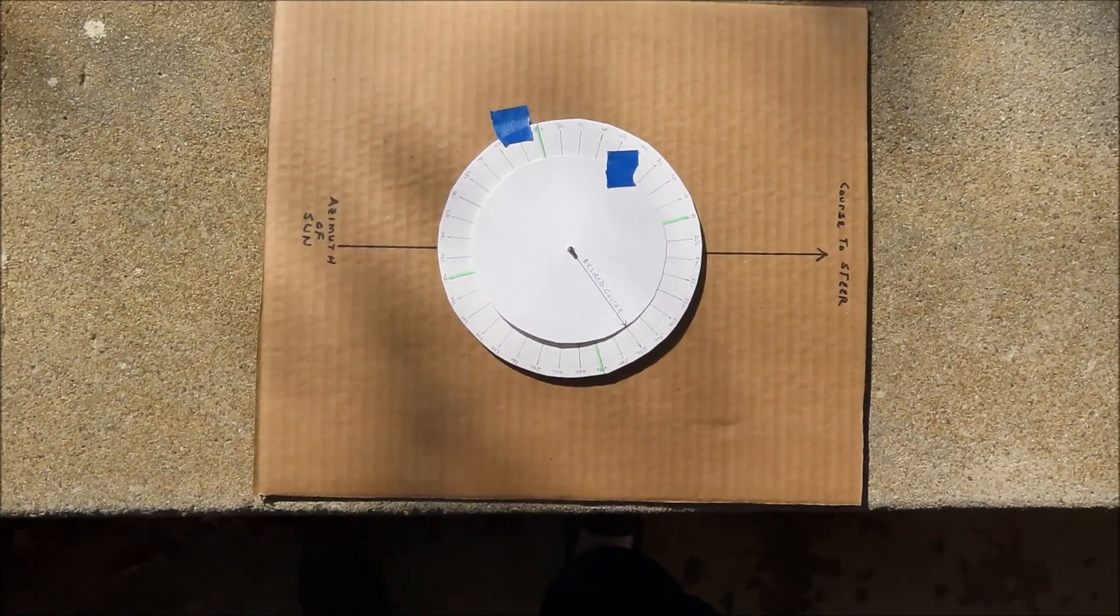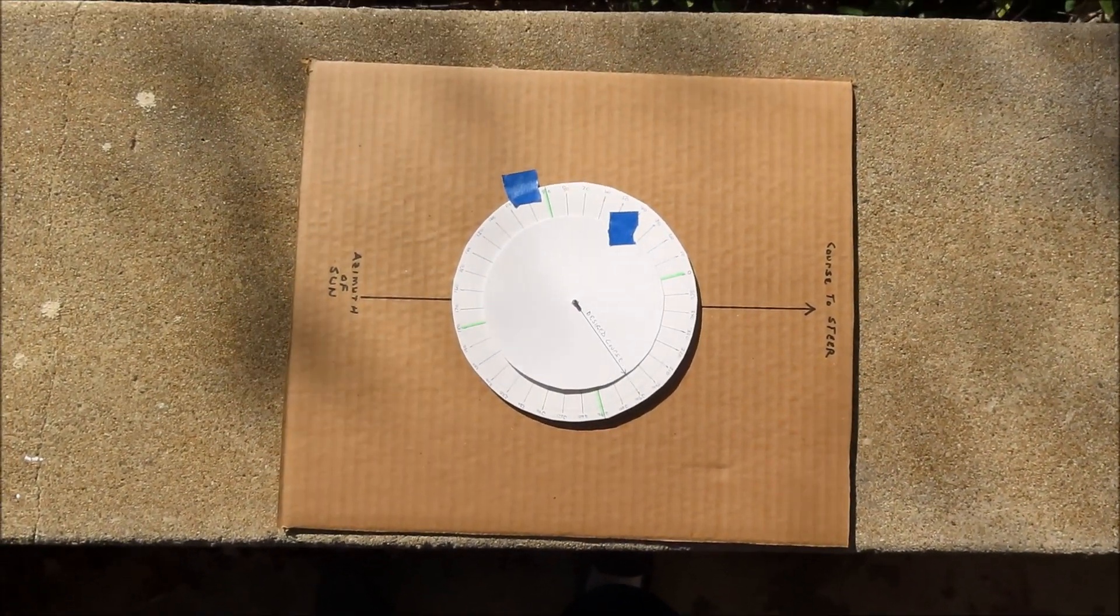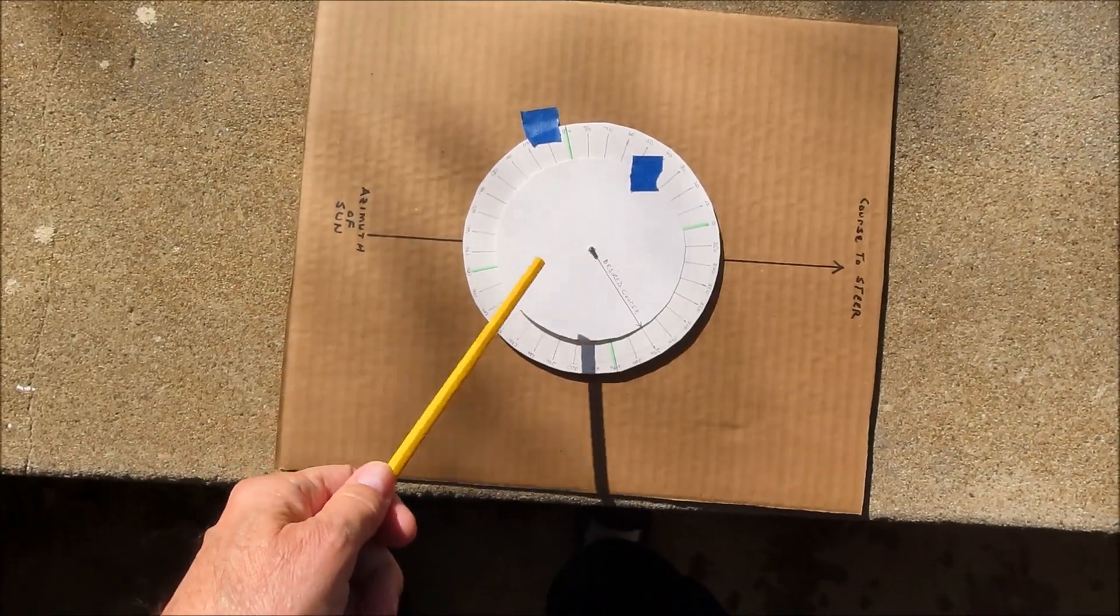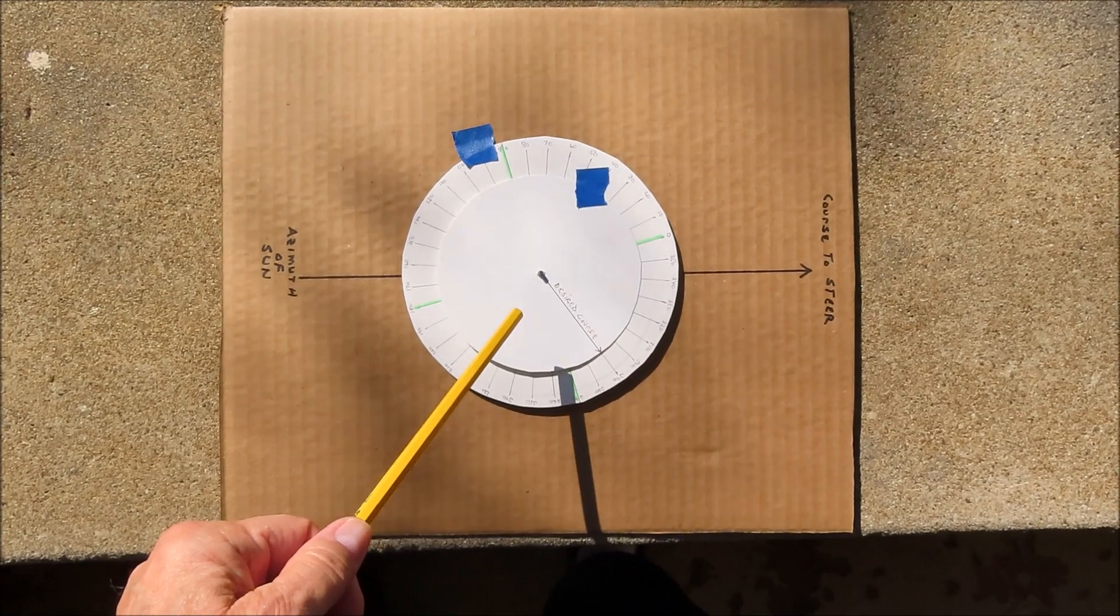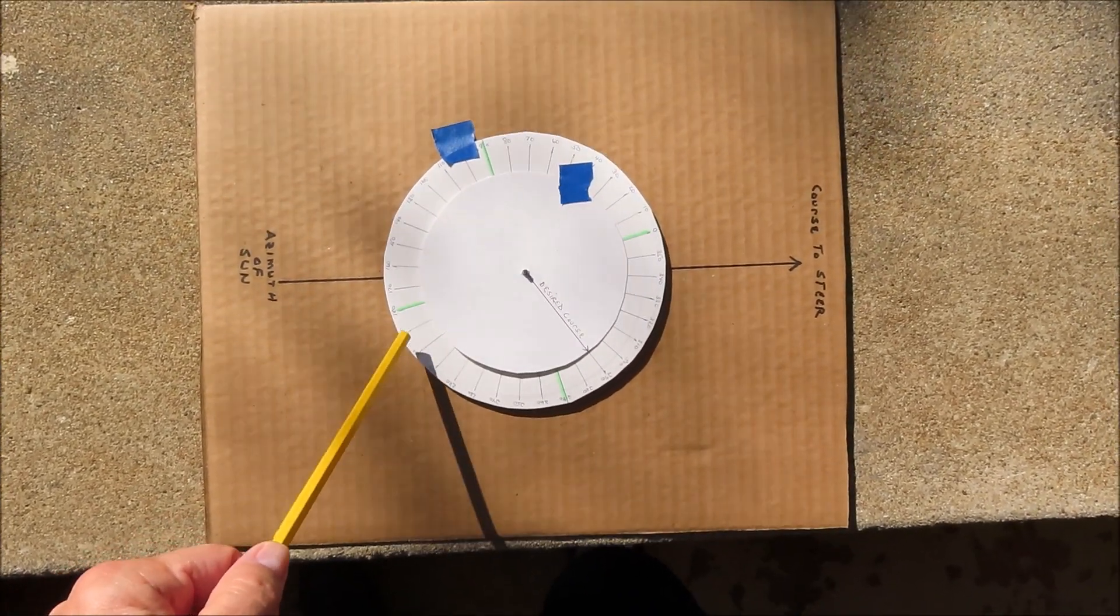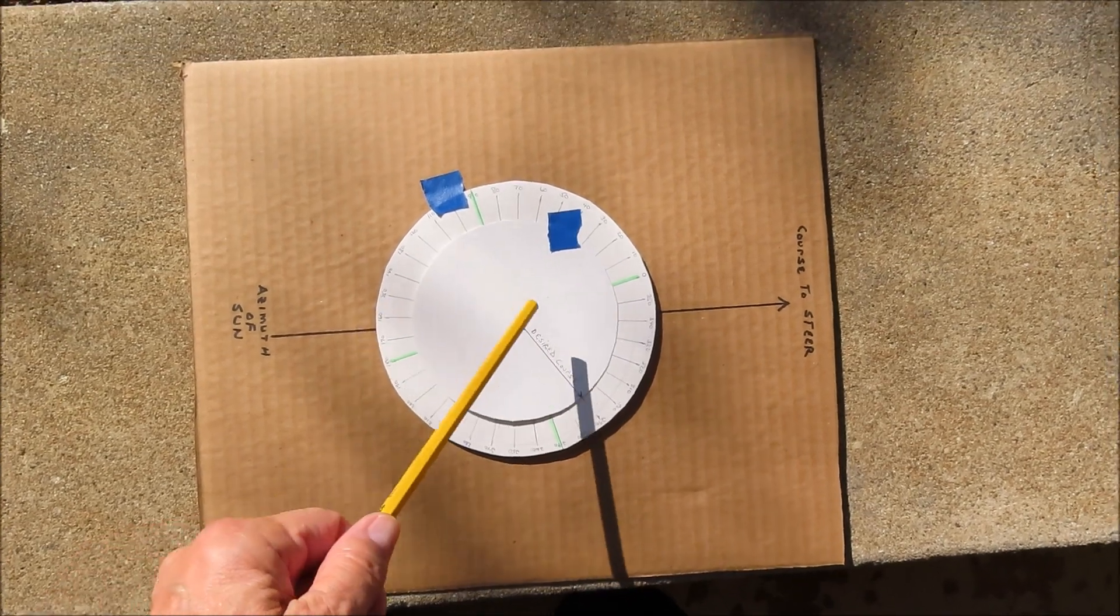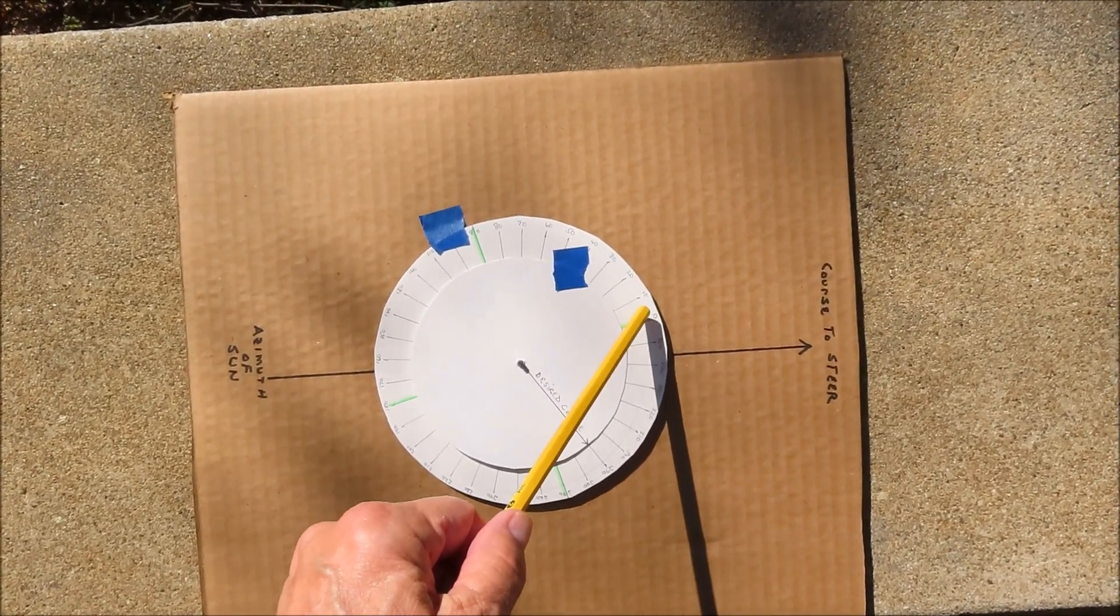This is a demonstration of the Bagnold sun compass. This is a crude model of one that I built out of cardboard and paper plates. There's two plates here.